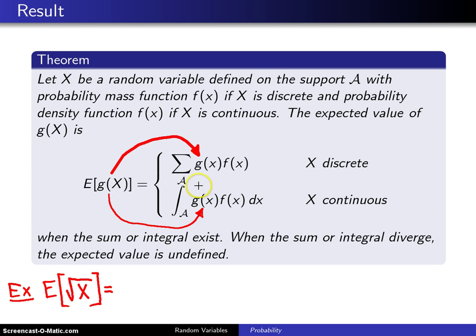Now, in the previous case, we had a continuous random variable. It was the uniform 0, 1. So we're going to use this bottom part of the definition. This will be the integral over the support of x, which is from 0 to 1, of g of x, which in this case is the square root of x, multiplied by f of x, and you know that f of x is 1 for that particular distribution, dx.